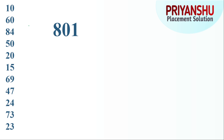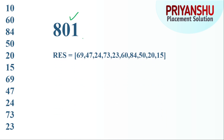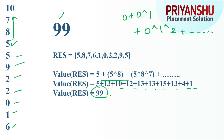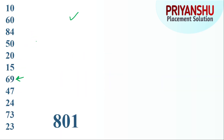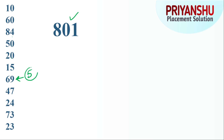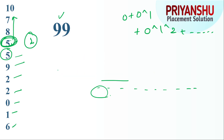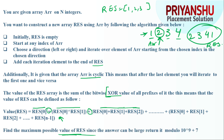In the second test case with 10 inputs, the answer is 801. The `res` starts at index 5 (element 69), giving res = [69, 47, 24, ...]. In the first example they started from the second index (element five), but in this second example they started from the fifth index. The problem states we can start from any index, which is the confusing part — since starting from different indices gives different answers.